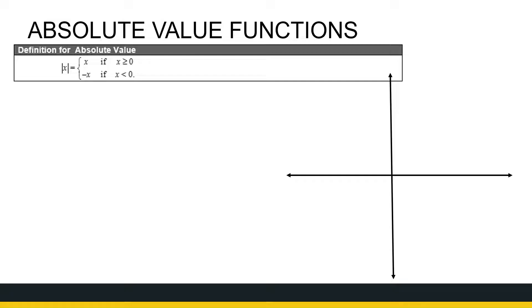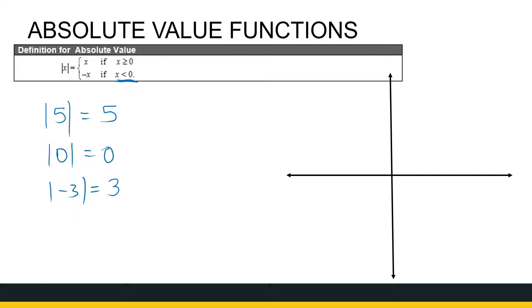Now the absolute value function — we're going to look at how to sketch it, but if you're not 100% familiar with absolute values, let's just see how it behaves. The absolute value of a positive number, like five, we'll just leave it alone. The absolute value of zero, it'll stay the same. Absolute value of minus three: if my value is less than zero, I multiply it with a minus, so minus times minus three is a positive three. So the absolute value looks at the size of the number — we don't look at the sign. We get rid of the sign to just look at the absolute size of the number.